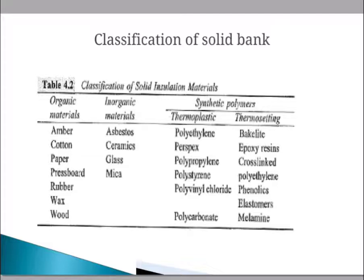Class F is rated at 155°C, same as Class B but with alkyd and epoxy-based resins. Class H is rated at 180°C and uses silicon resin binders, silicone rubber, aromatic polyimide film, and estermide enamels. Class C is rated above 180°C, same as Class B but with suitable non-organic binders, and includes Teflon and other high-temperature polymers.